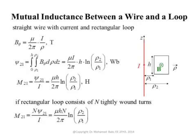The procedure for calculating mutual inductance is very similar to calculating self-inductance. You start by assuming a current in one of the two coils, then find the magnetic field, then calculate the flux linking the other circuit, then calculate the flux linkage, and then divide the flux linkage by the original current of the first circuit. In this example, we have a wire and a rectangular loop beside it with a single turn.